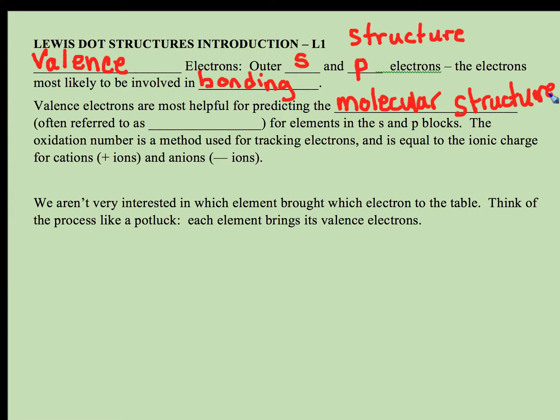We'll be doing a variety of structures later on, and this is going to be for elements in the s and p blocks. We won't be dealing with our transition metals with this. Because we're talking about covalent compounds, we're going to be looking at the elements in the upper right-hand corner and we're going to be counting their s and p electrons.